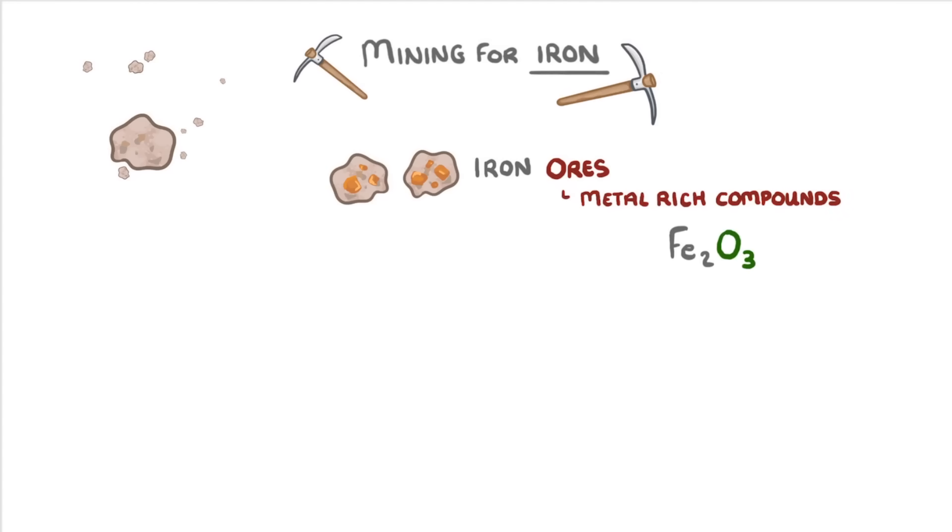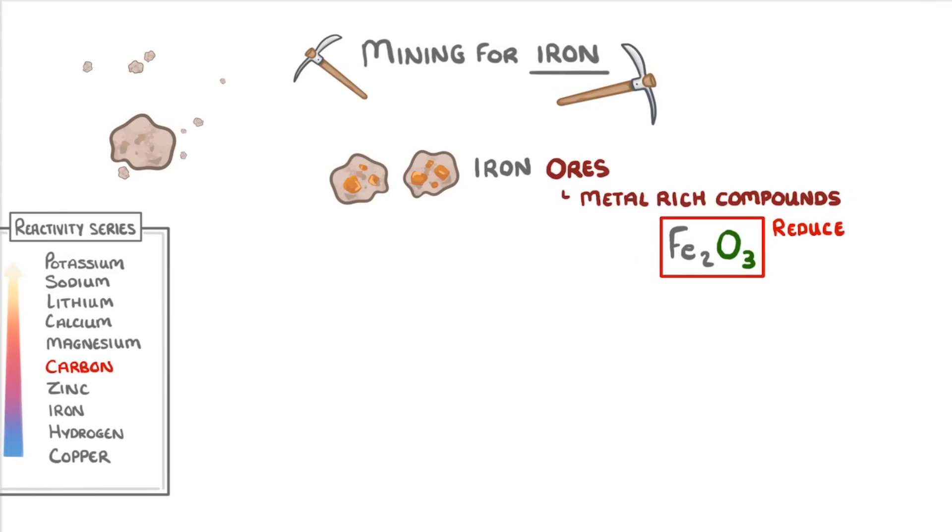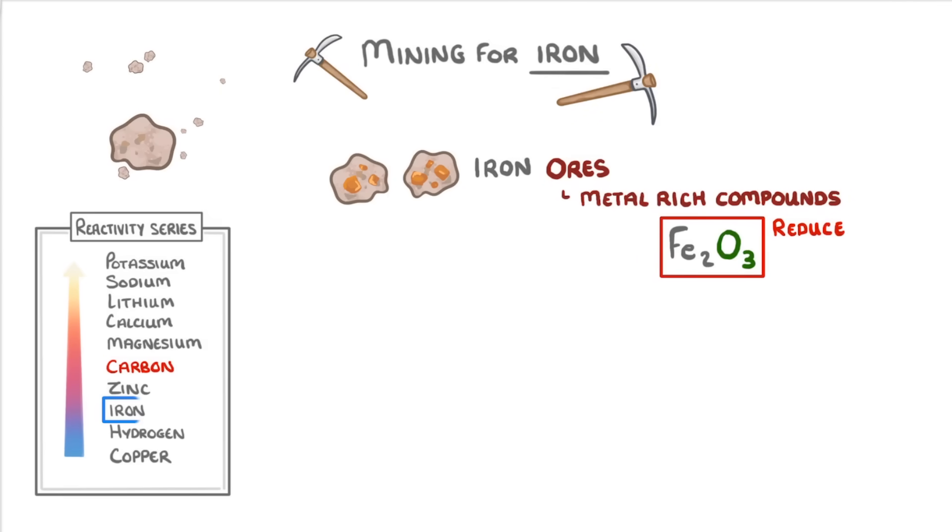So to isolate the pure iron, we need to reduce this iron oxide to just iron. If we check our reactivity series, we can see that iron is less reactive than carbon. So we're able to do reduction with carbon, rather than having to do electrolysis, like we would with these more reactive ones.